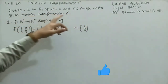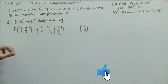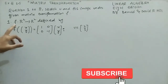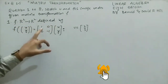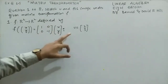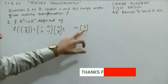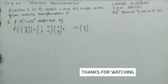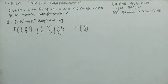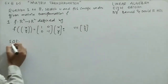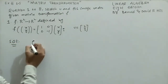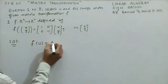From question 1 to 8, sketch u and its image under the given matrix transformation. The first question gives a function from R² to R² defined by f(x,y) = [[1,0],[0,-1]] times (x,y), with u = (2,3). For all questions 1 to 8, we first sketch u and then write its image in the R² plane. The formula for solving this function is f(u) = A·u.